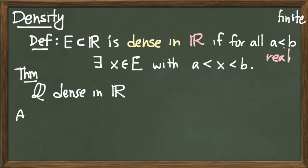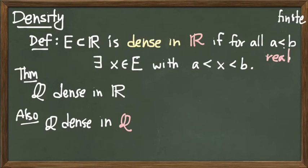But it's also true that Q is dense in itself. Between any two rational numbers, I can find another rational number. Think for a moment about why that might be true. In fact, there's a constructive way to build that proof.